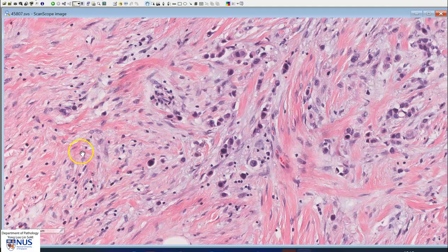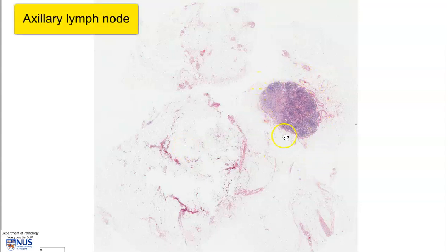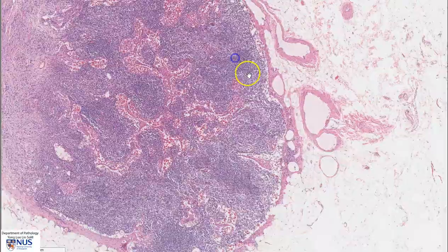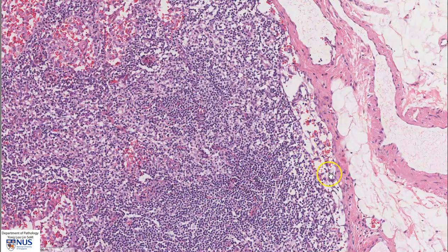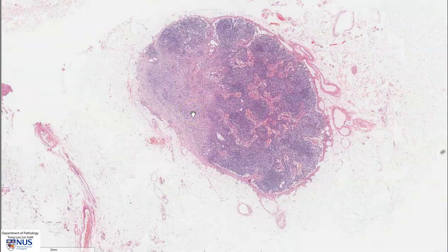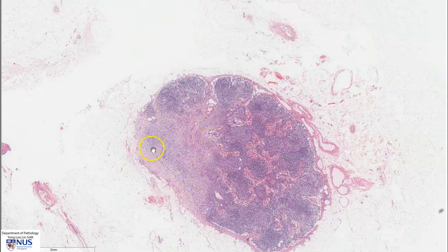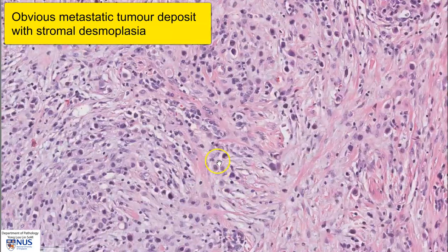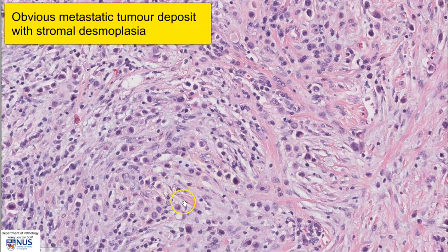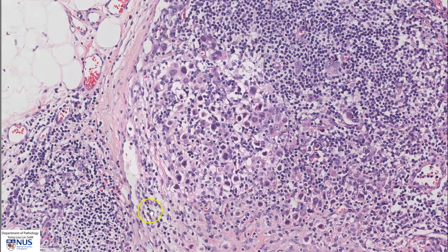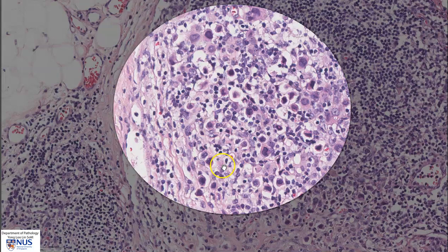This particular case also had nodal metastases. Here is an example of an axillary lymph node from this patient. We can see the normal lymph node with the capsule and the subcapsular sinuses. Sometimes metastatic lobular carcinoma can be very subtle, especially on frozen section examination of sentinel lymph nodes. However, in this particular case, there is an obvious tumor deposit with associated stromal desmoplasia. We can see these malignant epithelial cells infiltrating into the stroma, with a marked desmoplastic stromal response with spindled myofibroblasts and some inflammatory cells. We can recognize these metastatic carcinoma cells because they are larger than the lymphocytes.